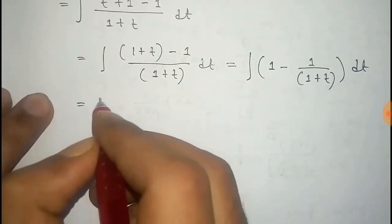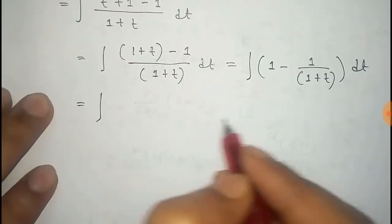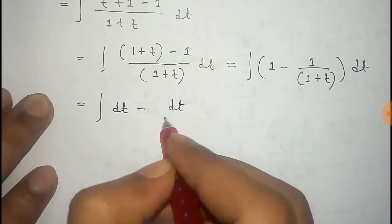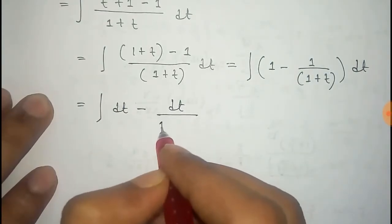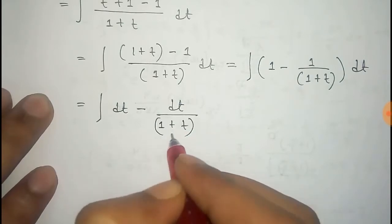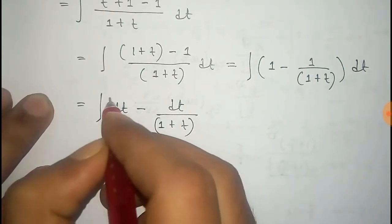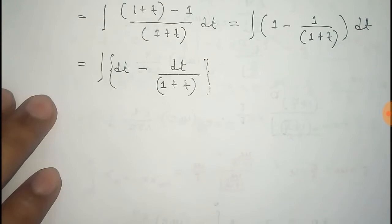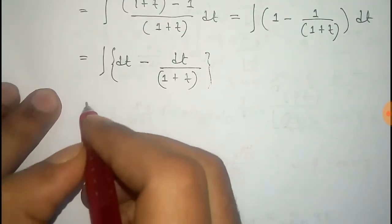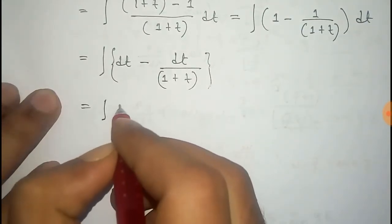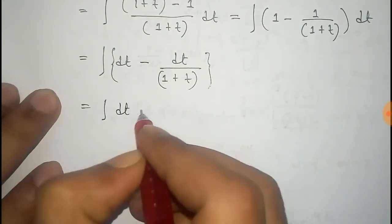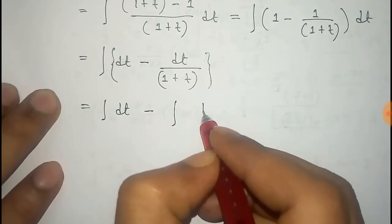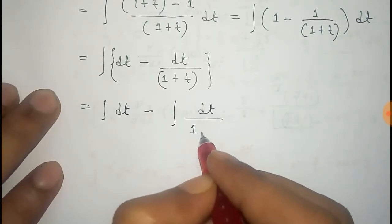That is equal to the integral of dt minus the integral of 1 dt by 1 plus t. Separating into two integrals: integral of dt minus integral of dt by 1 plus t.